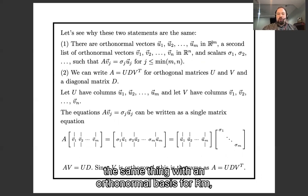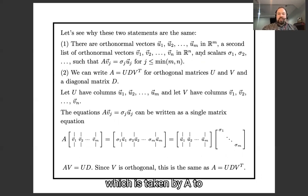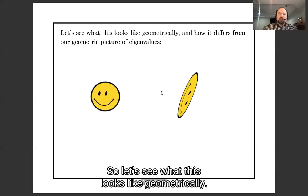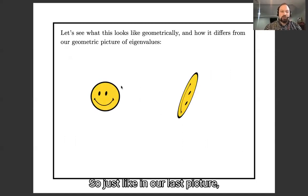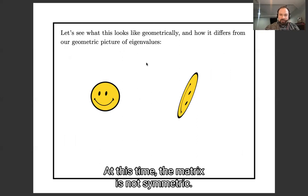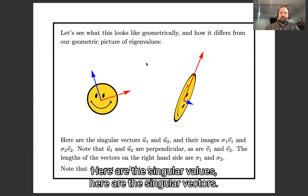There's an orthonormal basis for R^m, which is taken by A to an orthonormal basis for R^n times some scalars. So let's see what this looks like geometrically. So just like in our last picture, here's my happy face. And here's my happy face multiplied by a matrix. And this time the matrix is not symmetric.